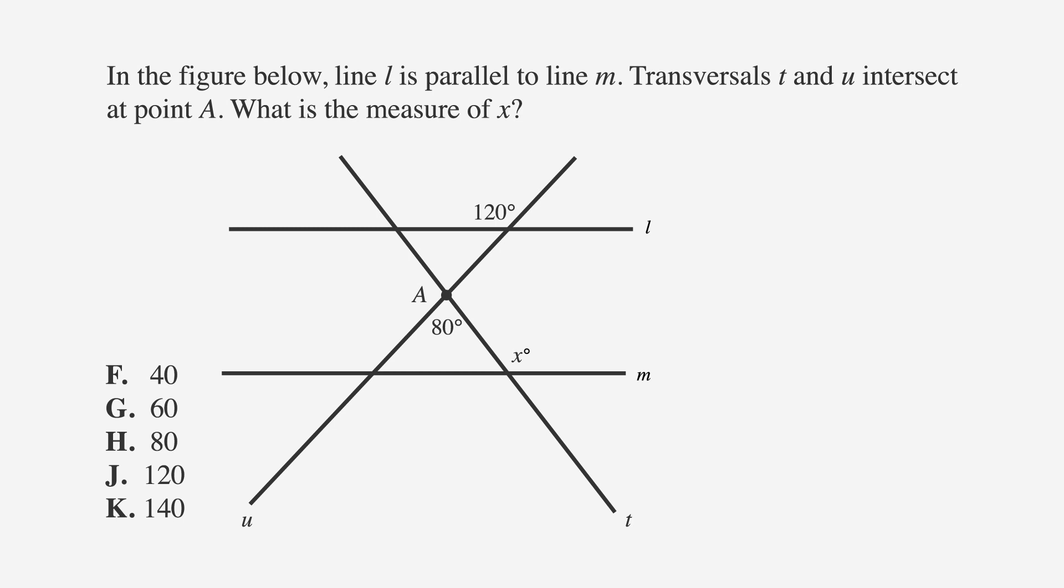Our question reads, In the figure below, line L is parallel to line M. Transversals T and U intersect at point A. What is the measure of X? The answer choices are F, 40, G, 60, H, 80, J, 120, and K, 140.